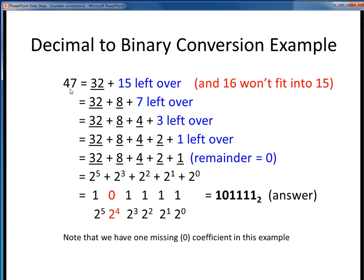The first thing we do is find the biggest power of 2 that fits into 47. Well, 64 is too large, so we start with 32. We subtract 32 from 47 to get a remainder of 15. So now we repeat the process on this remainder of 15.